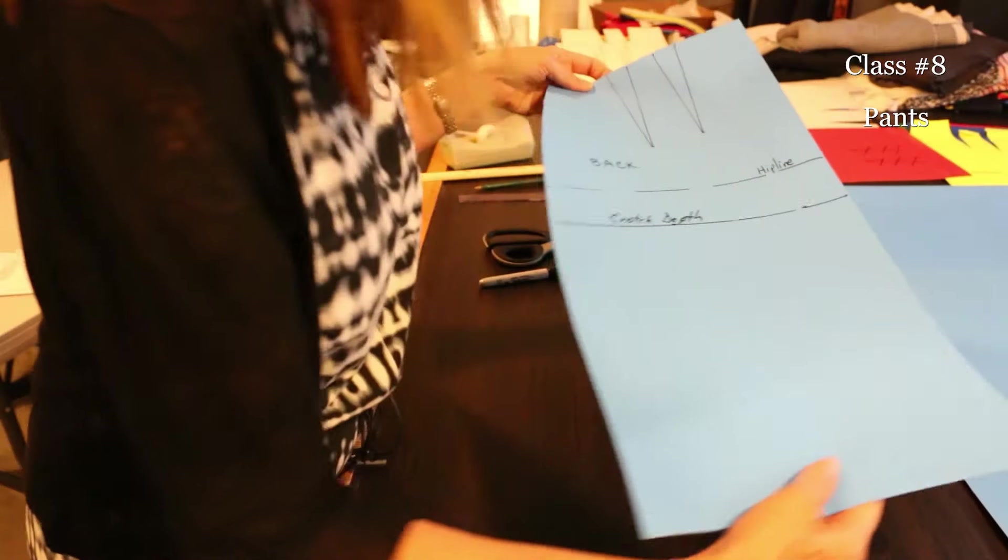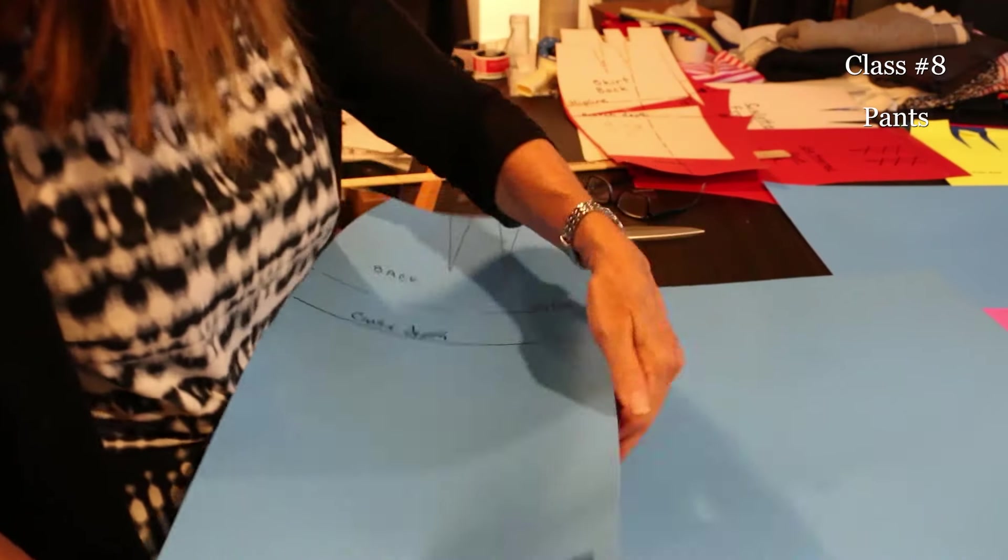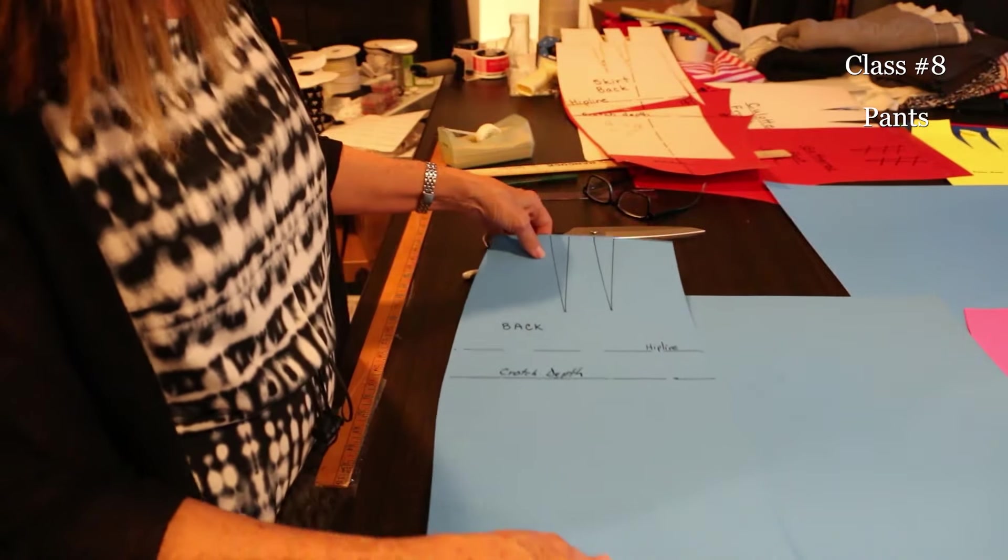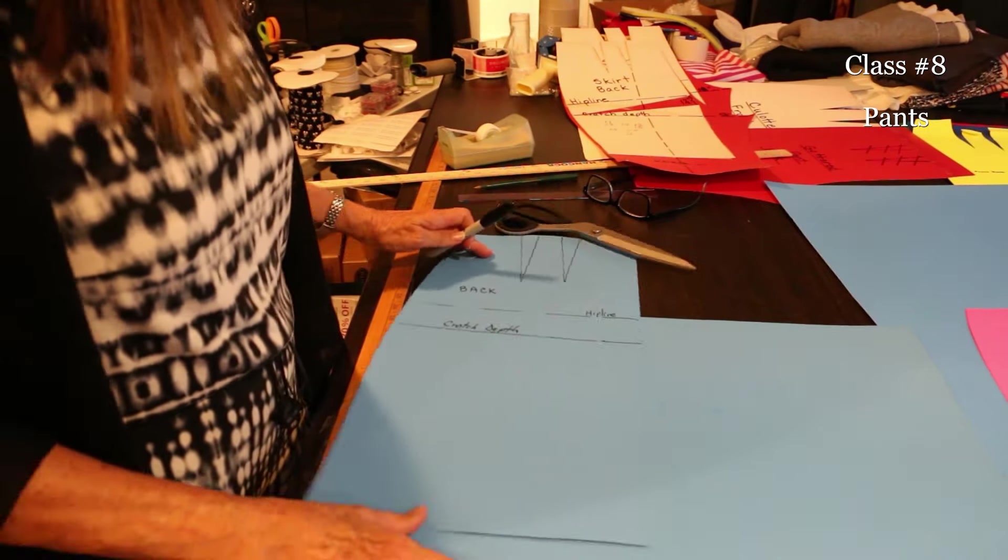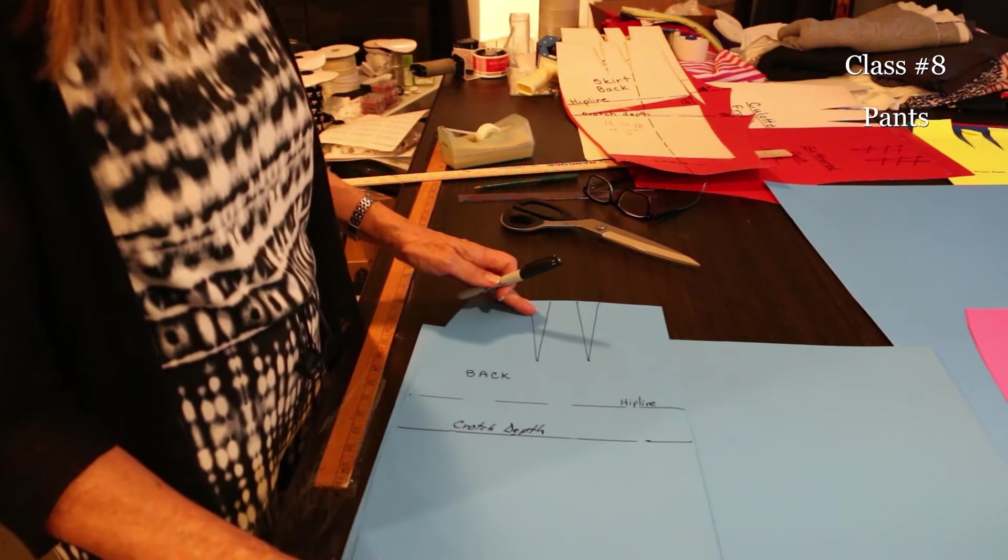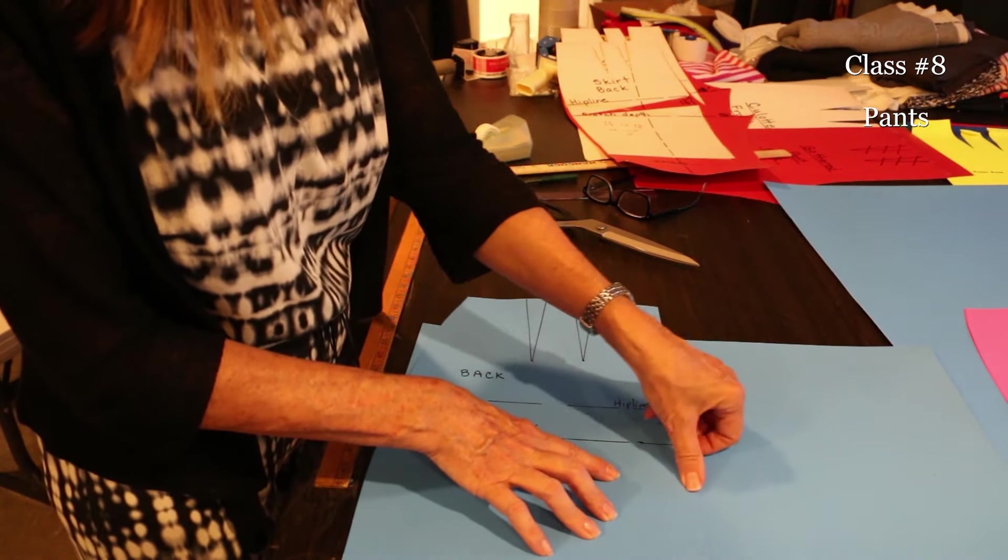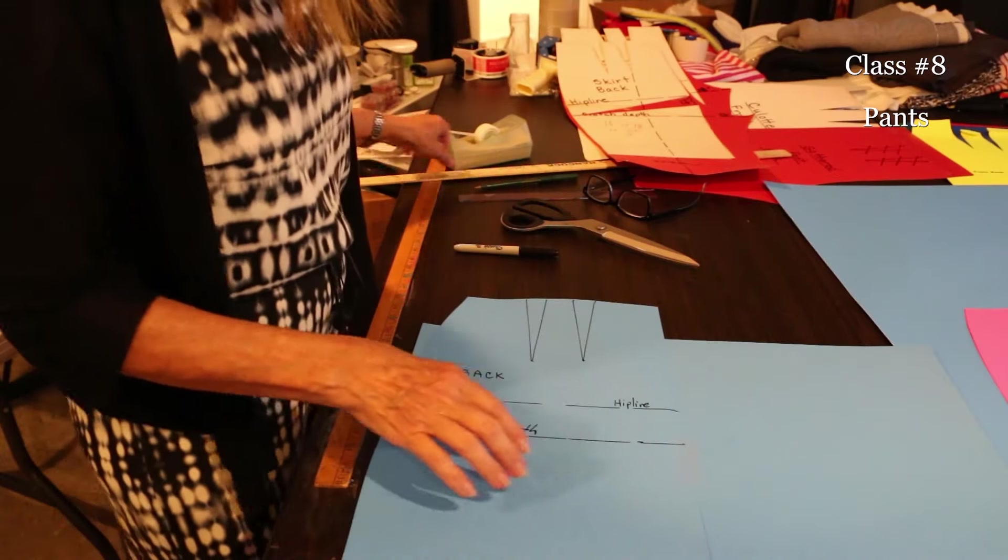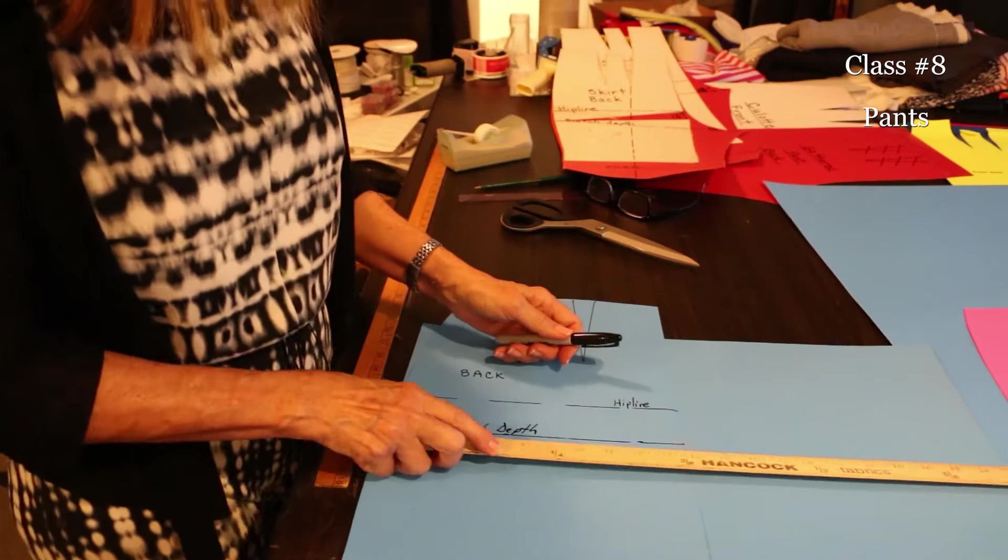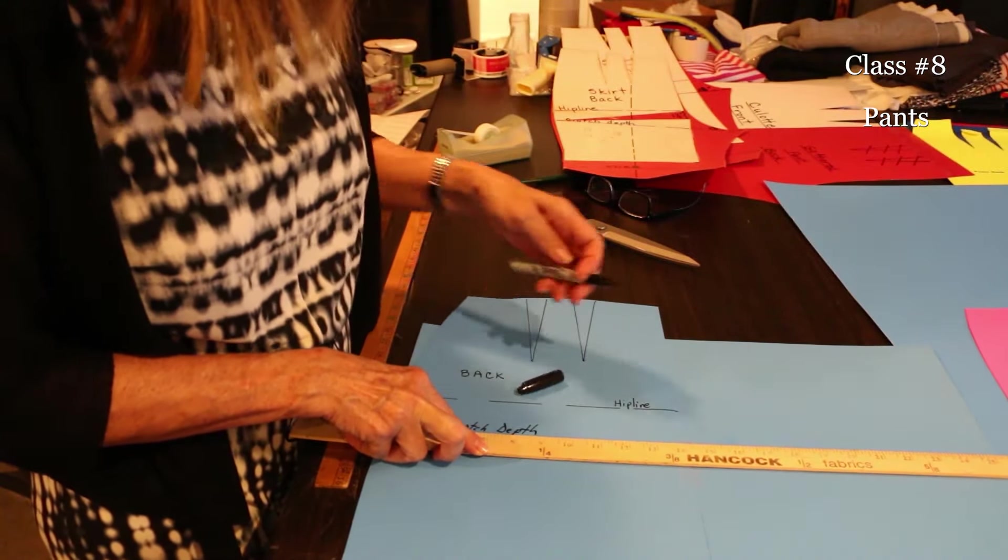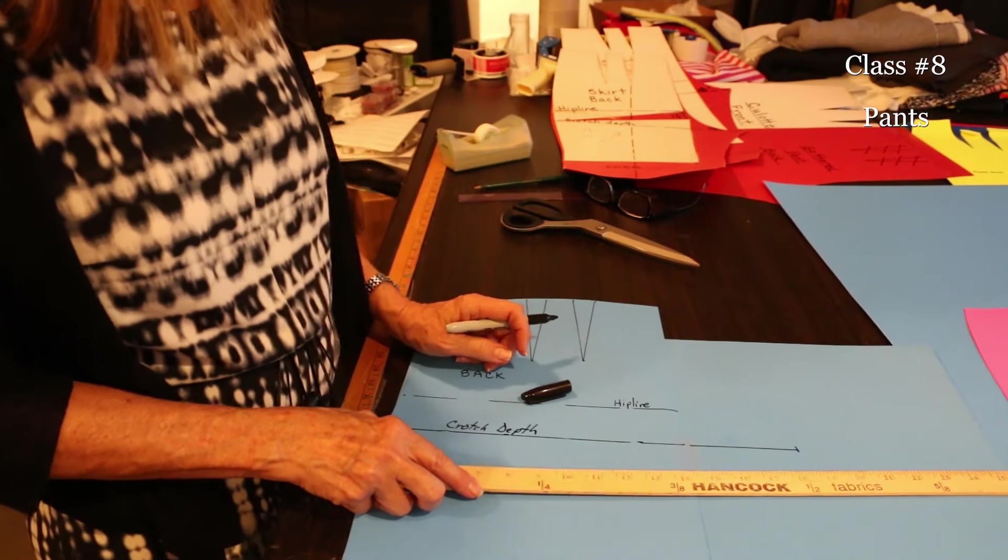Then what we're going to do is we're going to actually extend the seam into center front. I'm going to use this piece of paper behind it and I'm going to tape it in place. I'm going to tape this portion in place because generally what we do now is we extend the crotch depth into center front. It's all done according to numbers but it's usually about four to four and a half inches in the back. This is the back now.